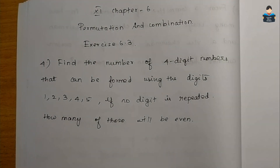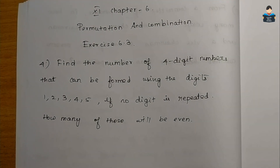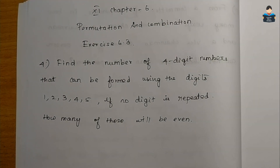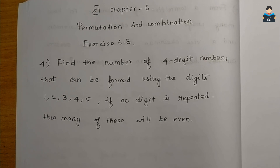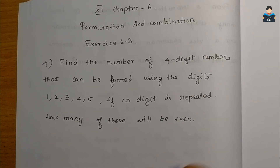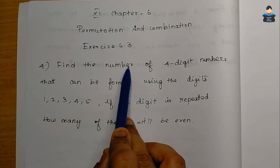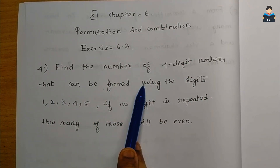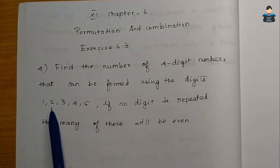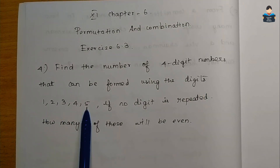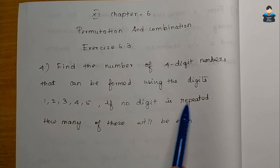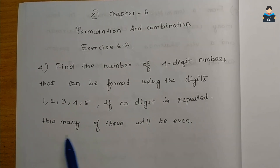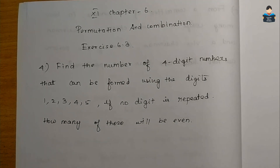Hello everyone, welcome to our channel. In this video, we look at Standard Chapter 6, Permutation and Combination, Exercise 6.3, Question number 4. We need to find the number of 4-digit numbers that can be formed using the digits 1, 2, 3, 4, 5 if no digit is repeated, and how many of these will be even.